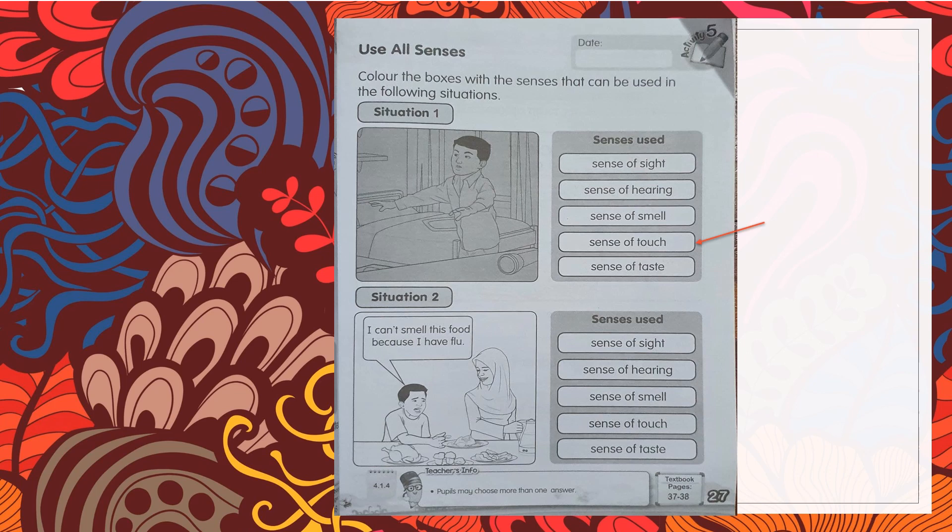Kita akan menggunakan deria sentuh, sense of touch. So, color your answer here. Satu saja ya, sense of touch ini. And situation two. I can't smell this food because I have flu. Dia kata dia tidak dapat menghidu bau makanan ini kerana dia sedang selesema. Jadi, apabila dia tidak dapat menggunakan deria menghidu, apalagi deria lain yang dia boleh gunakan untuk menikmati makanannya.